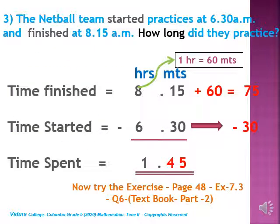Let's do the next question — this one is a little harder. The netball team started practices at 6:30 a.m. and finished at 8:15 a.m. How long did they practice? You have the same words: started, finished, and how long — which means the time duration. Write the statements: time finished, time started, and time spent. I have shown the column headings — hours and minutes. In the minutes column you have 15 and 30; in the hours column you have 8 and 6.